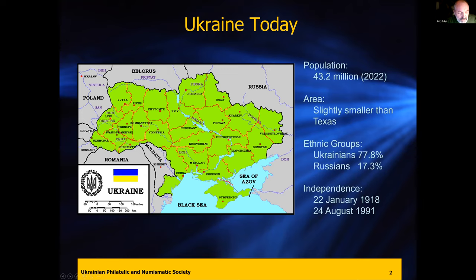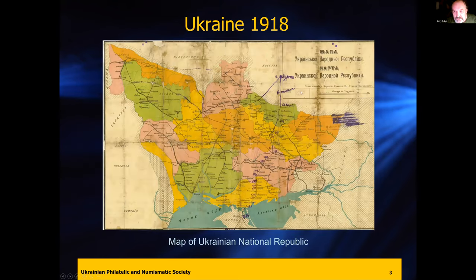Historically, there's been a lot of border movement back and forth between Ukraine and the neighboring countries. Going back to the early 1900s, this is a map of Ukraine from around 1918, the Ukrainian National Republic. You could see the borders extended further west and north into what today is Russia, because a lot of these were ethnic lands where over 50% of the population was Ukrainian or Ukrainian-speaking. It does not show Western Ukraine, which at the time this map was issued was still part of the Austro-Hungarian or Habsburg Empire.